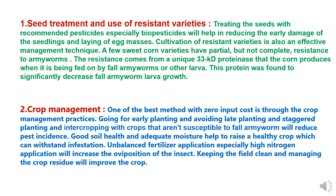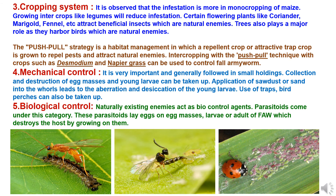The second method is crop management. One of the best methods with zero input cost is through crop management practices: going for early planting and avoiding late or staggered planting, and intercropping with crops that are not susceptible to Fall Army Worm, will reduce pest incidence. Good soil health and adequate moisture help raise a healthy crop that can withstand infestation. Unbalanced fertilizer application, especially high nitrogen, will increase oviposition. Keeping the field clean and managing crop residue will reduce infestation.